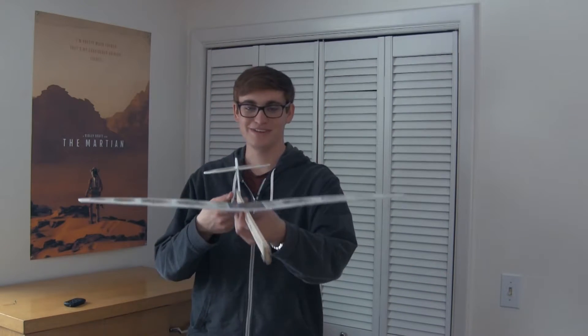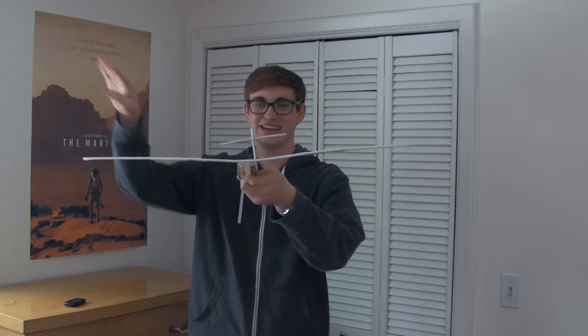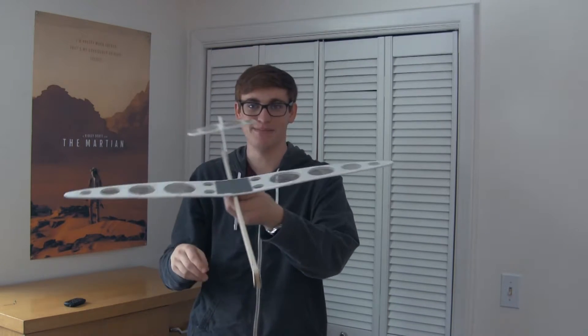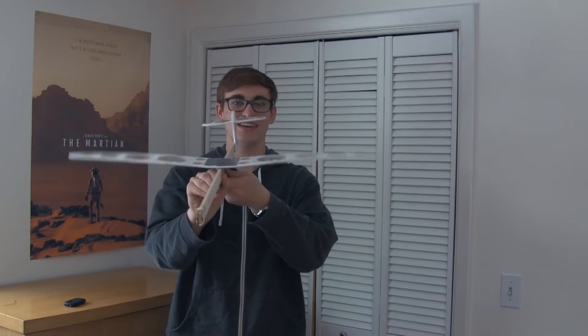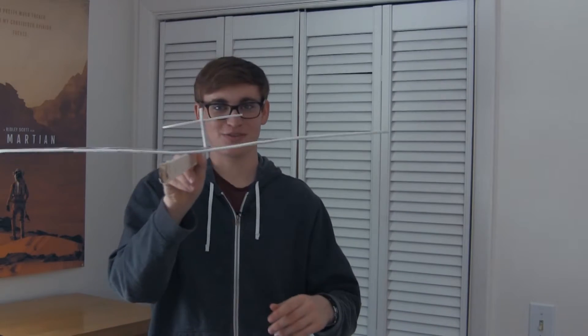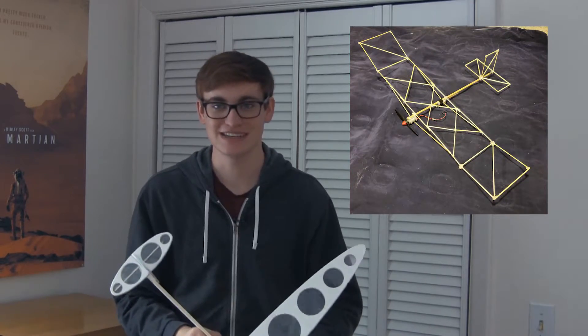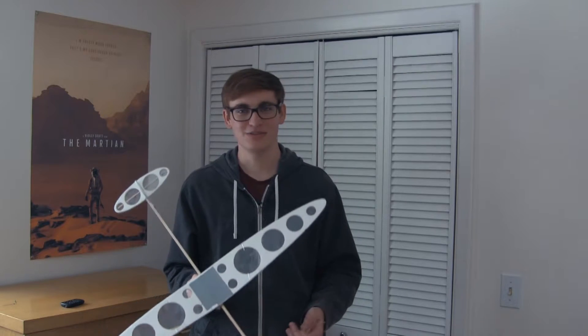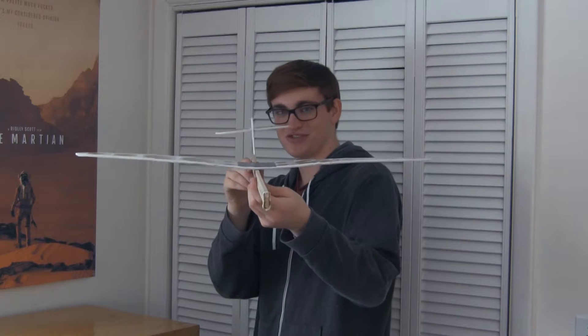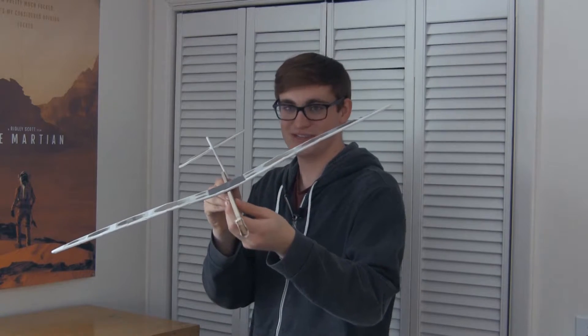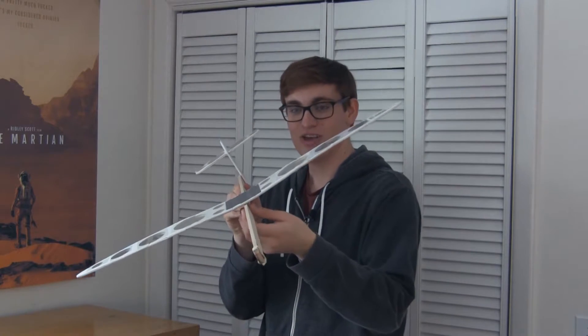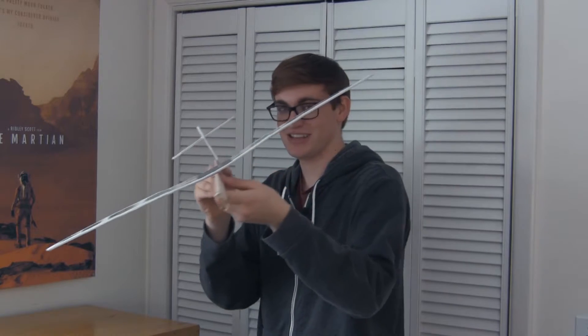And finally, a common design feature between these two gliders is the dihedral, which is the wings bending up. This makes it so your plane is stable in the roll direction. Now, the main difference is this entire wing is dihedral, while my old one just had the wing tips, but the effect is the same. I don't know if I have the best explanation of how dihedral works, but I'll try. Imagine your plane flying pretty much straight and level, and then it gets hit by a gust of wind and turns and rolls.